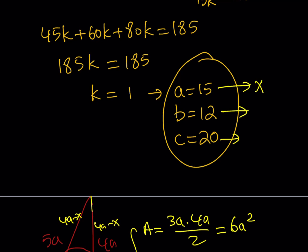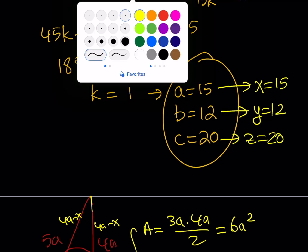So, this means X is equal to 15, Y is equal to 12, and Z is equal to 20. And, we are done.